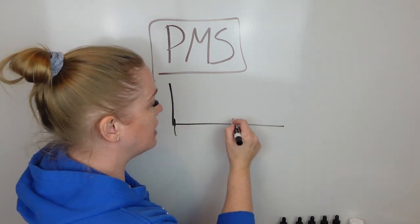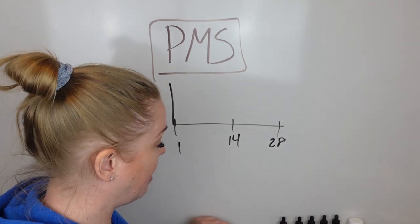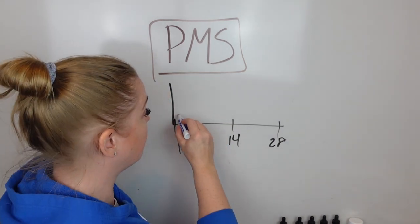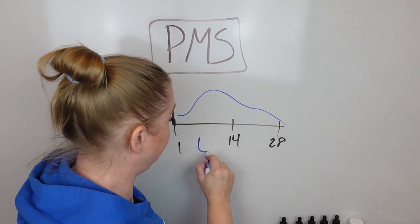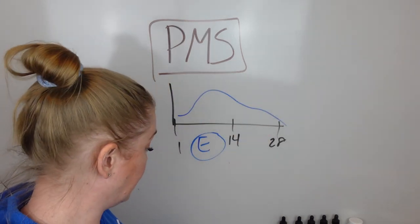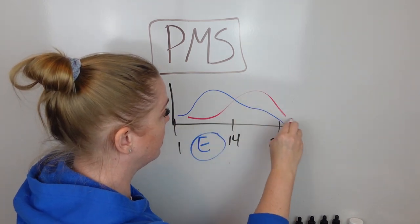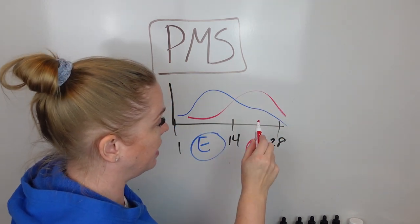So here is a really quick, rough description of what's happening throughout your hormonal cycle. Estrogen is higher here in the first couple of weeks, and then progesterone increases here in the second couple of weeks.